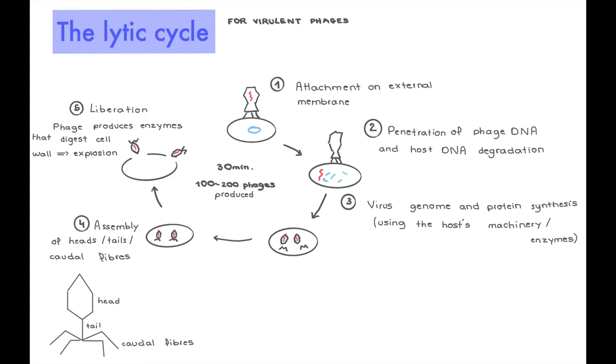Then the phage DNA, or genome, is going to penetrate inside the cell, and it's going to segregate the host DNA. If you remember in my horizontal gene transfer video, we looked at this as well. In step three, there's going to be synthesis of the virus genome and its proteins, and this is using the host machinery, enzymes, everything the cell would normally use to replicate its own DNA, to create its own proteins. The virus is going to use that to do it for himself.